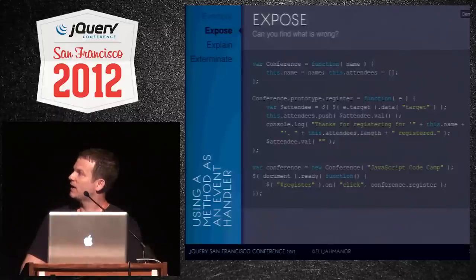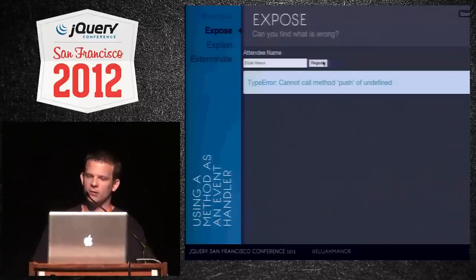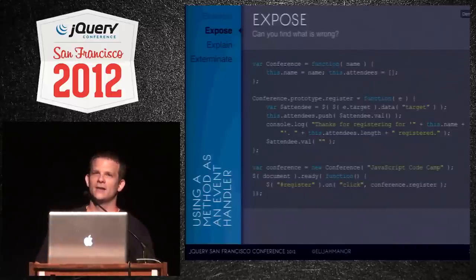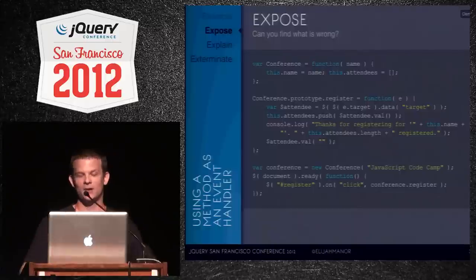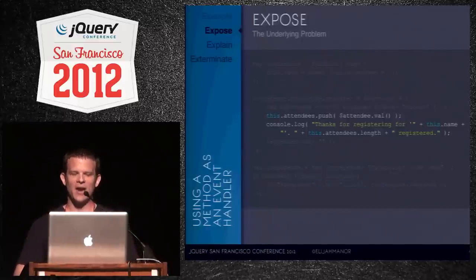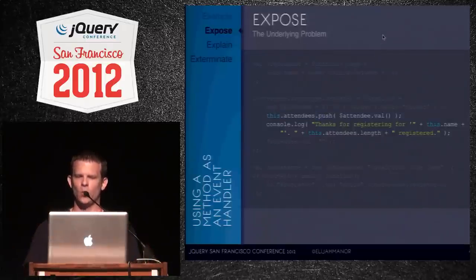The developer takes the register button, wires up an onclick passing that conference.register method directly. When we run it and click register, we get: 'cannot call push of undefined.' The error means this.attendees is undefined inside the register method. When jQuery calls your callback on a click event, it sets 'this' inside your method to the DOM element that was clicked — not the conference object. So this.attendees doesn't exist on the button element.